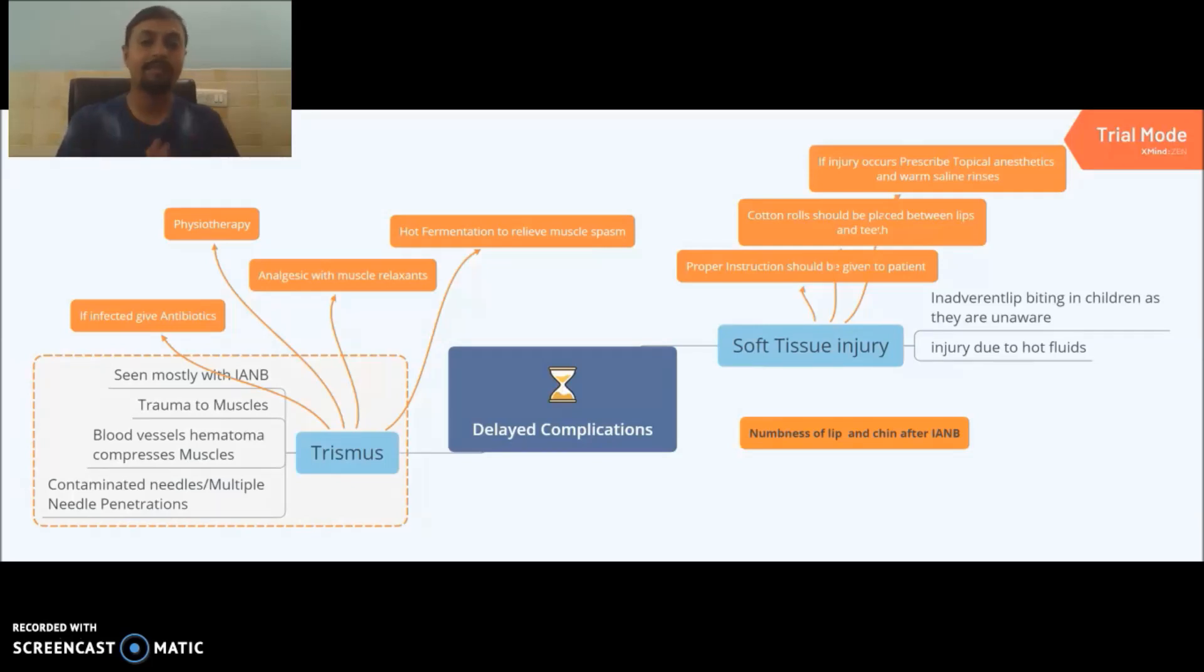Second is soft tissue injury. This occurs whenever the patient inadvertently bites his or her tissue. It is most commonly seen in children because they are unaware of the numbness. It is also seen in adults when they consume hot fluid till the numbness has worn off. Soft tissue injury is most commonly seen after inferior nerve block because after that we see numbness of the lip and chin. How to prevent it? Proper instruction should be given to the patient. You can place a cotton roll between lips and teeth. If injury occurs, prescribe topical anesthetic to the patient and advise them to go for warm saline rinses which decreases discomfort and soreness.